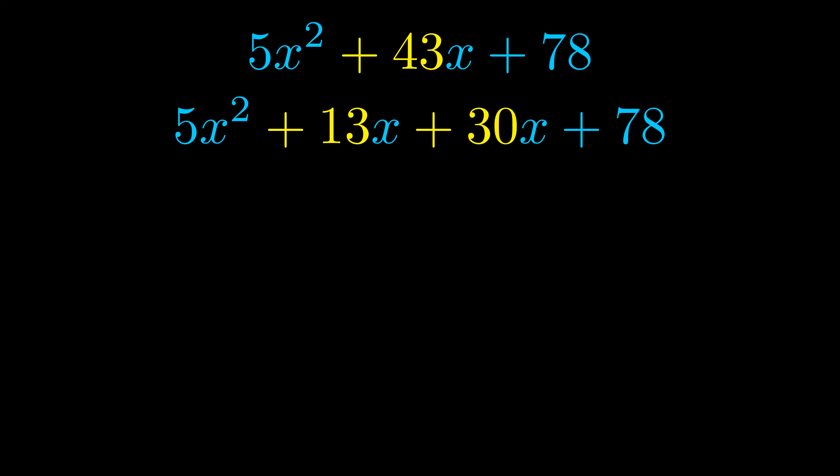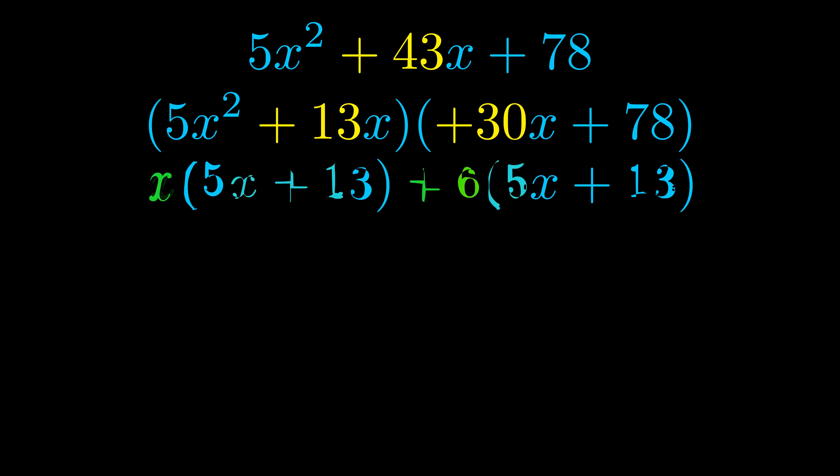Once we've done this we go ahead and we put parentheses around the first term and the last term. And we do that so that we can take the greatest common factor out of both terms. We can see the greatest common factor is now outside in green. Notice also how what remains inside of the parentheses is the same in both cases. The blue values are the same.